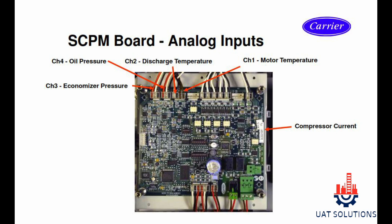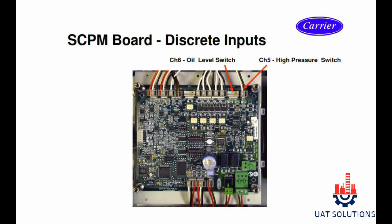Connected device connection positions are marked with arrows on the TCPM board as shown. The oil pressure sensor is connected on channel 4. The discharge temperature sensor is connected on channel 2. The motor temperature sensor is connected on channel 1. The economizer pressure sensor is connected on channel 3. The oil level switch is connected on channel 6. The high pressure switch is connected on channel 5.